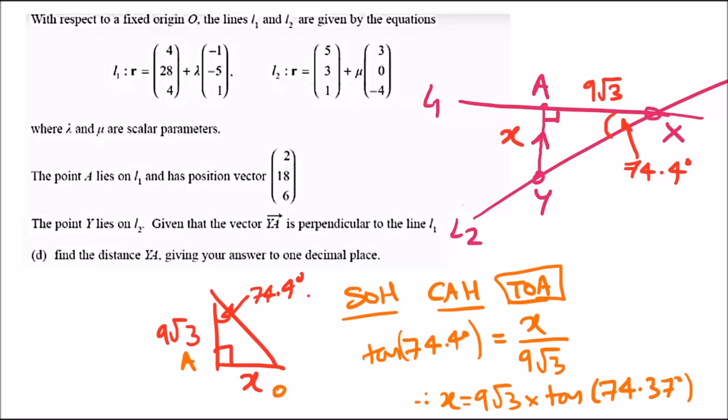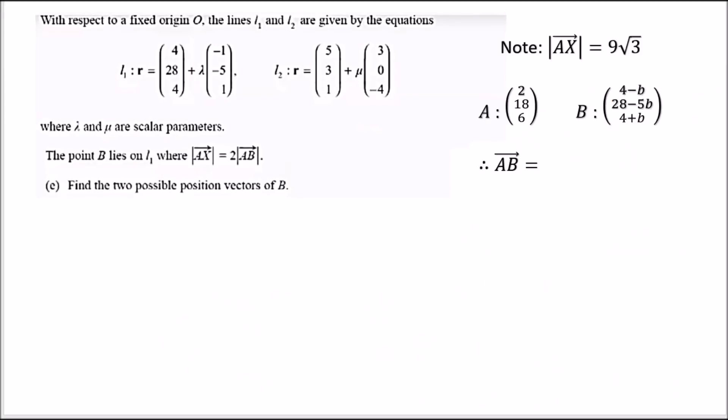Make sure your calculator is in degrees mode. Calculating 9 root 3 times tan 74.37, I got 55.7. So the X equals 55.7 units.